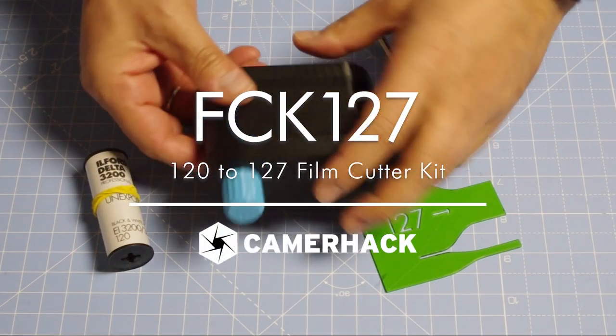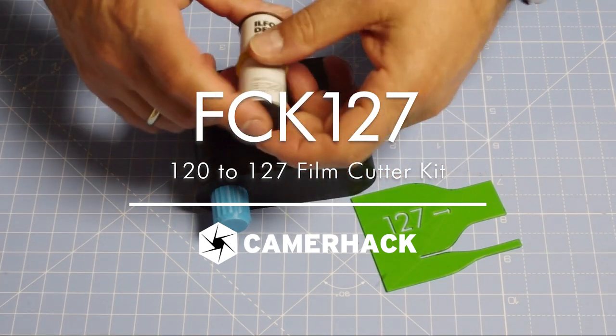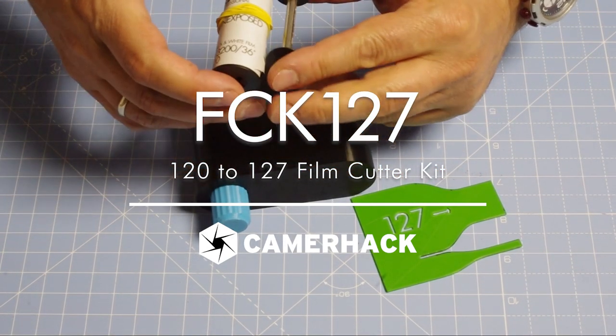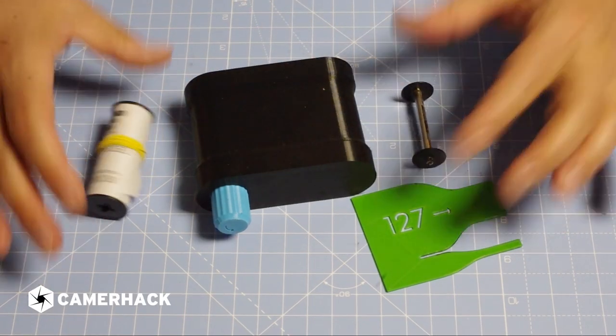This is the film cutter that cuts 120 film and rolls it onto 127 film. I will show you how it works.